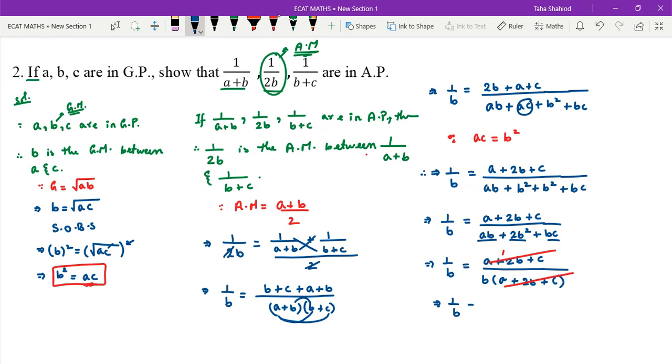1/B equals 1/B. Therefore, 1/(A+B), 1/2B, and 1/(B+C) are in AP, which is what we needed to prove.